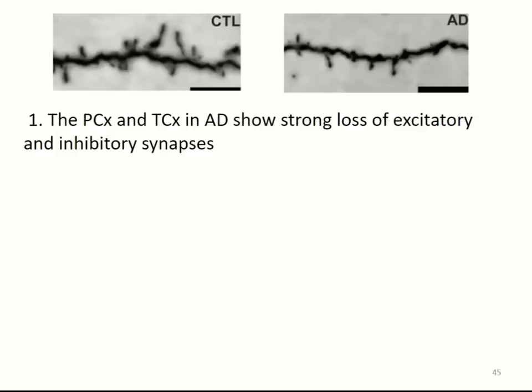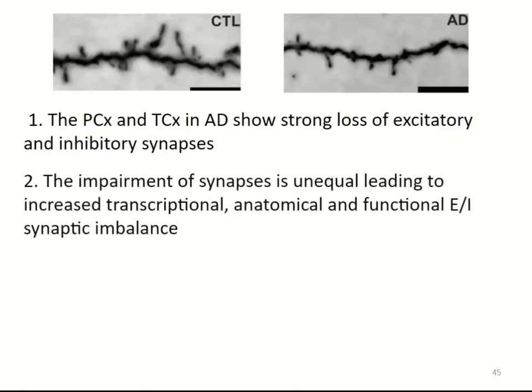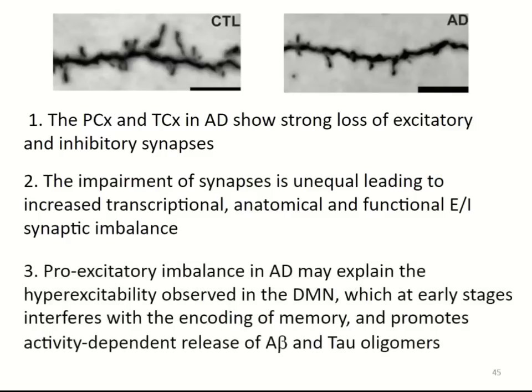The transcriptional EI ratio of post-synaptics correlates very nicely with the cellular data, and the correlation is driven by Alzheimer's disease. This tells us that in Alzheimer's disease, the parietal and temporal cortex show strong loss of both excitatory and inhibitory synapses. The impairment is unequal, leading to increased transcriptional, anatomical, and functional EI synaptic imbalance, as well as cellular EI imbalance.